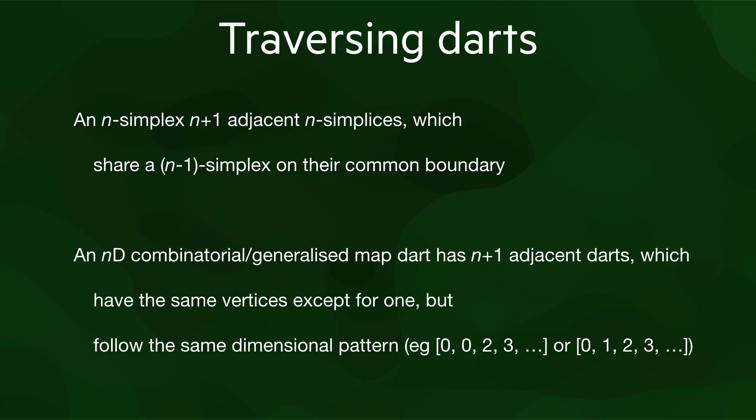Then, because an n minus 1 simplex on the boundary of an n-simplex has all of its vertices except one, we also know that two adjacent simplices share all of their vertices except one. And because darts always have the pattern of vertices of different dimensions that we discussed before, when we move from a dart to its adjacent neighbor, we are simply switching one of its vertices for another of the same dimension.